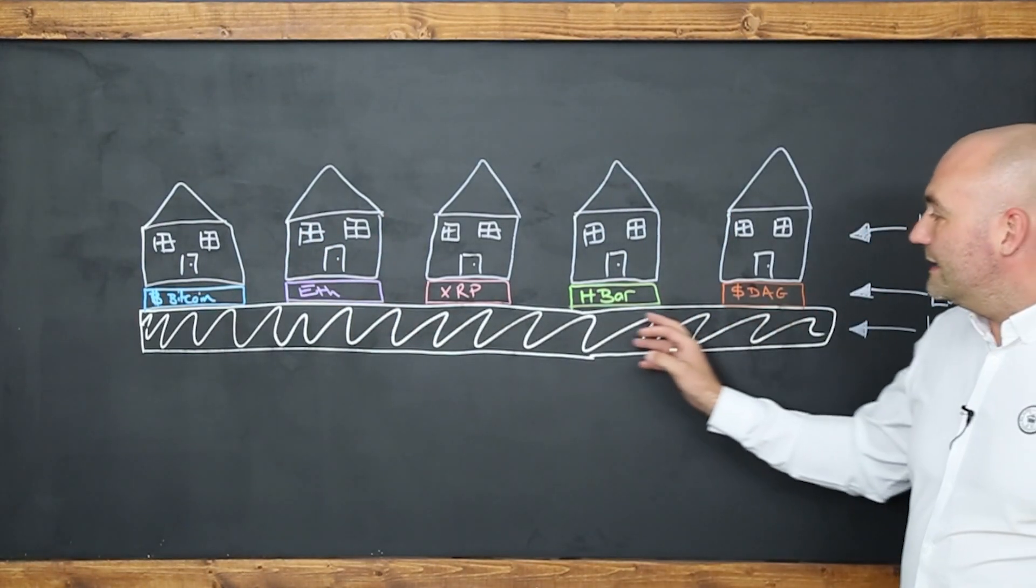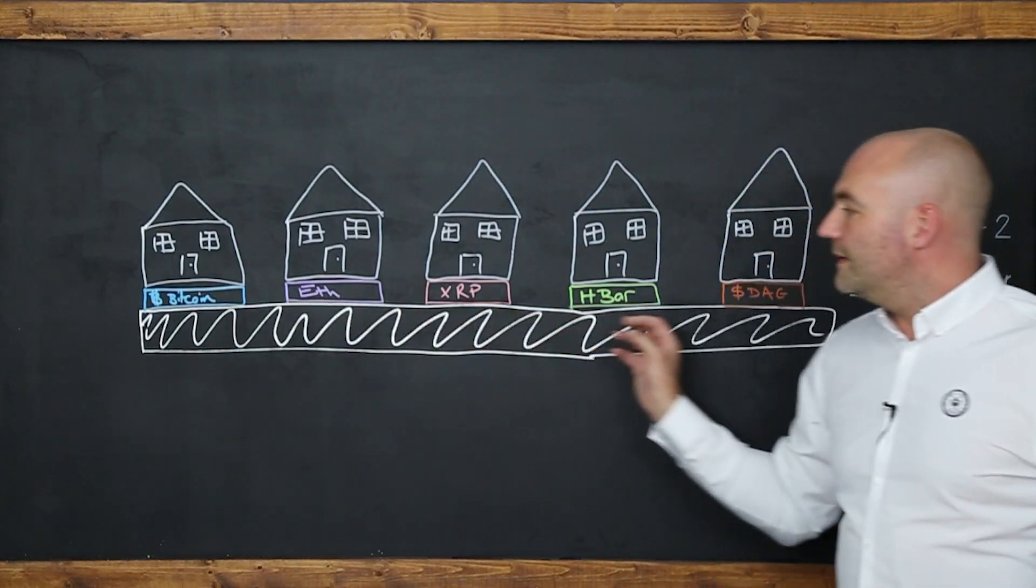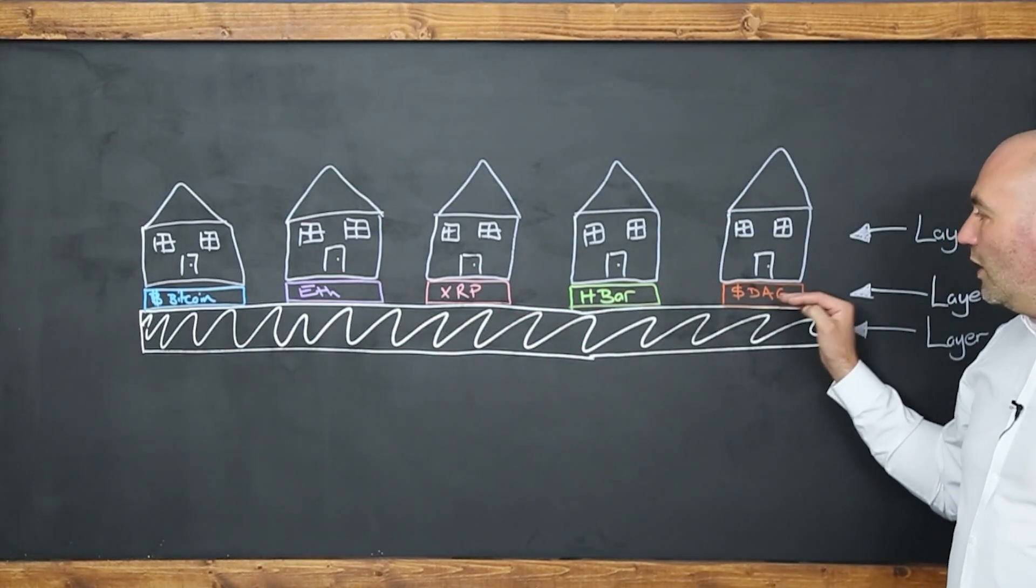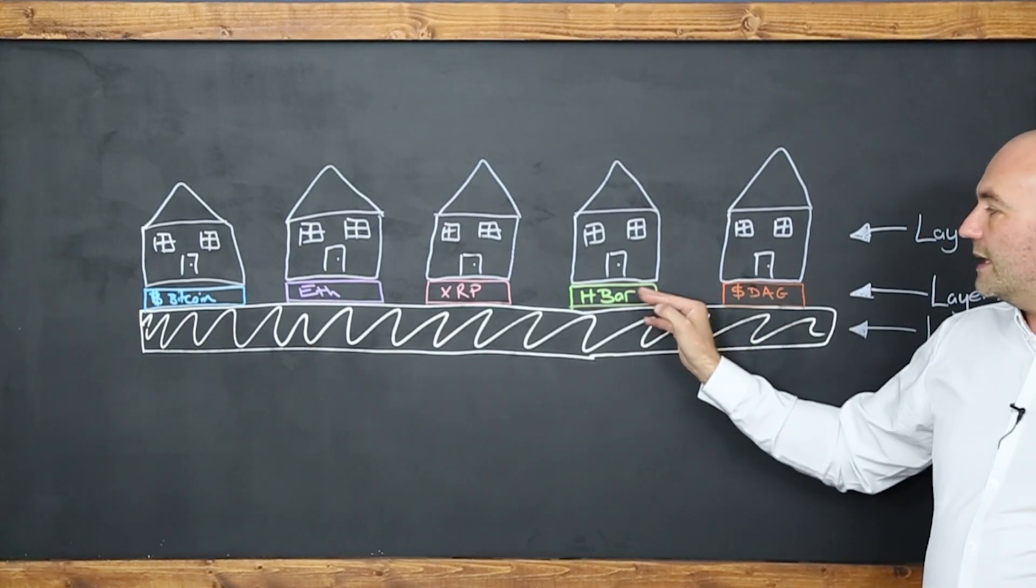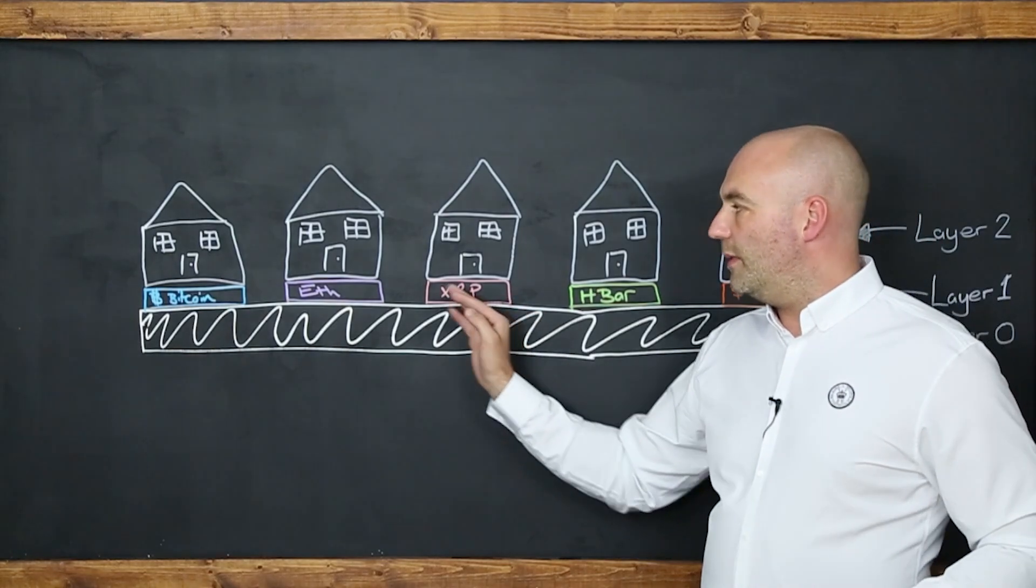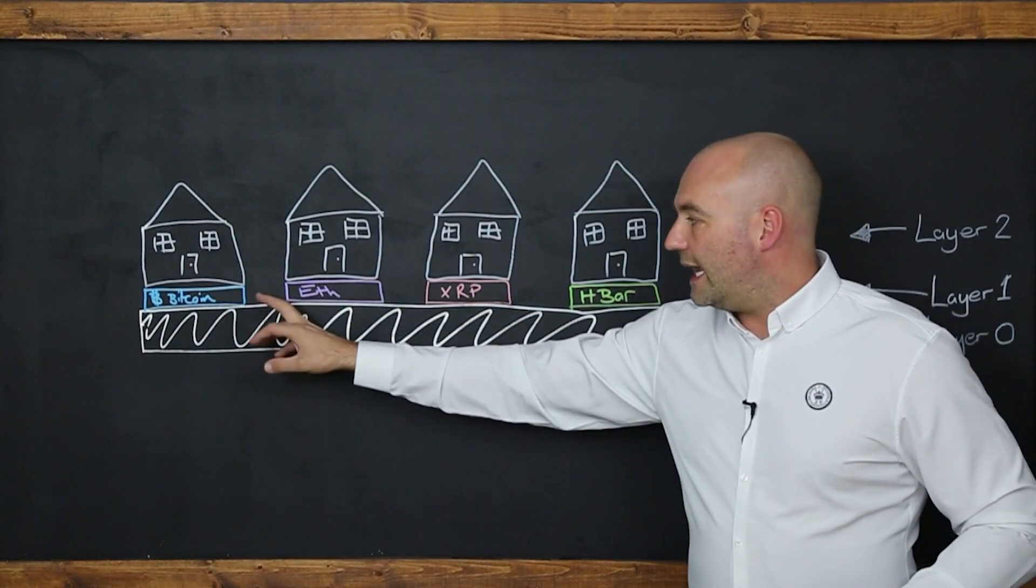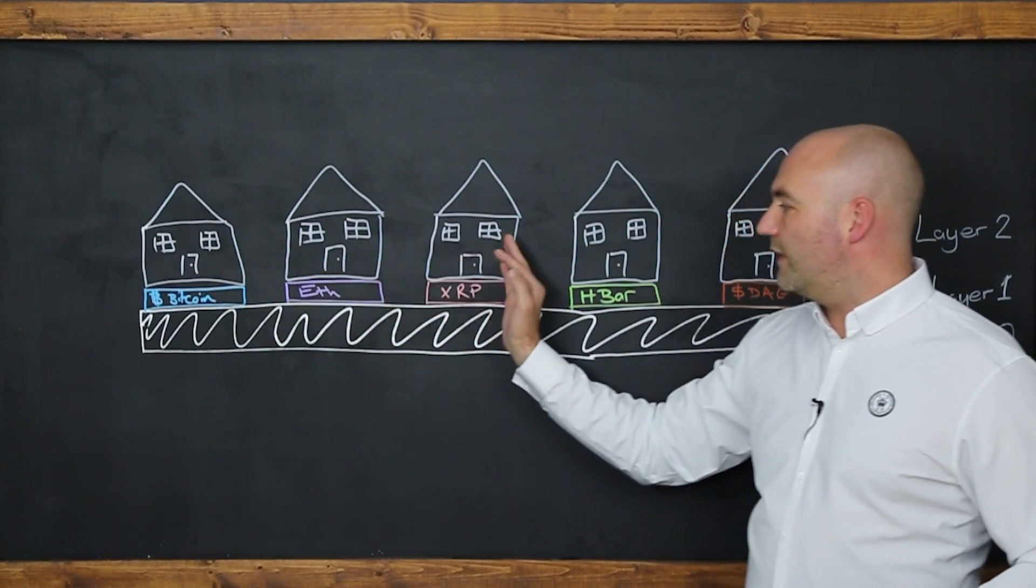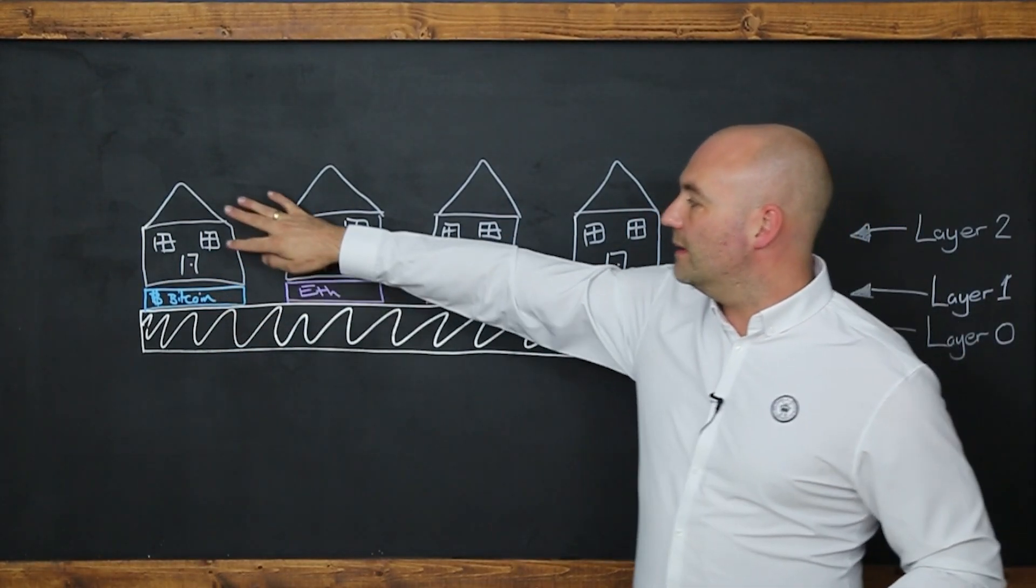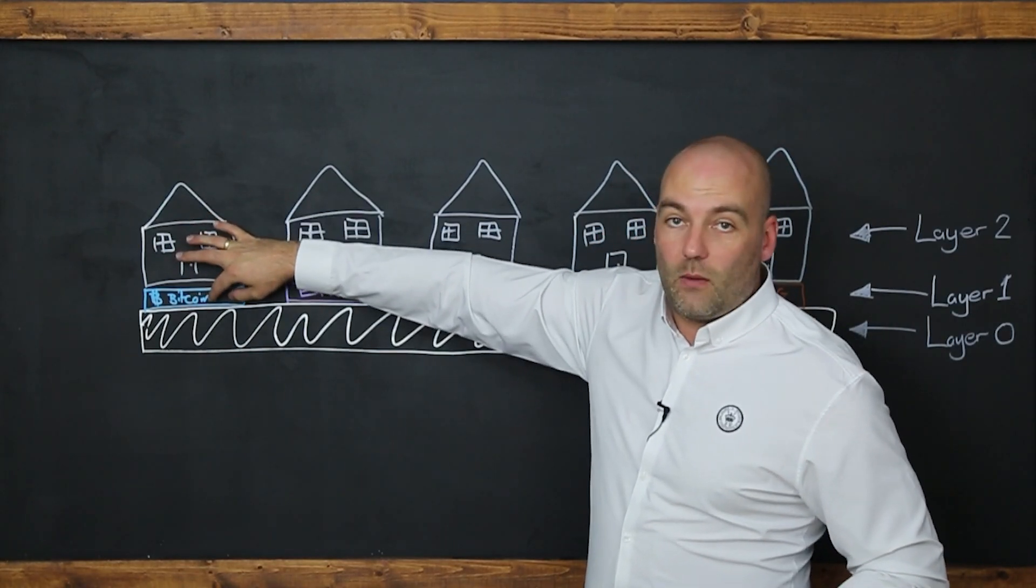Now, this is zero layer. And zero layer sits under all of the layer ones. So it sits under the foundation of DAG, it sits under the foundation of HBAR, it sits under the foundation of Ripple, and so on and so forth. It's a tunnel that communicates, allows communication between each one of these. And everything can be built on top of the layer one.